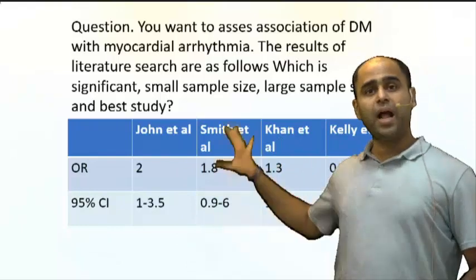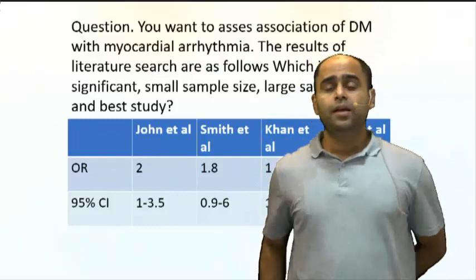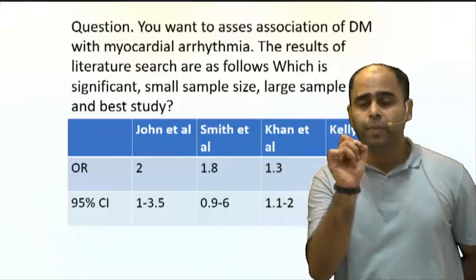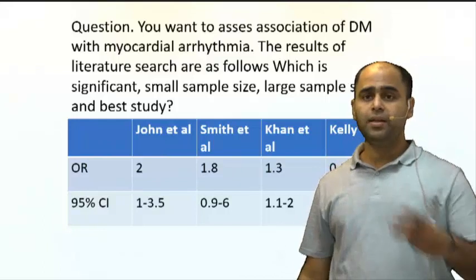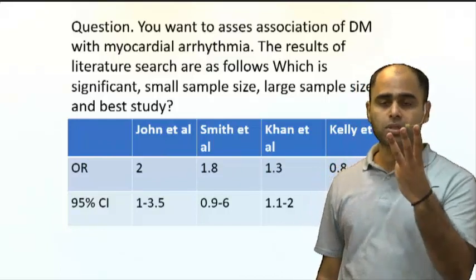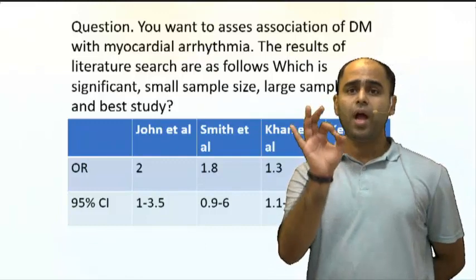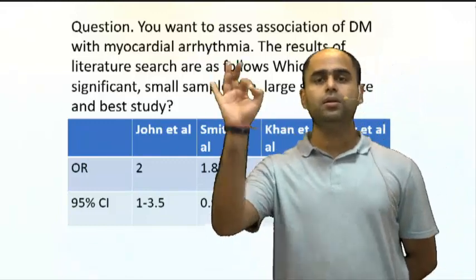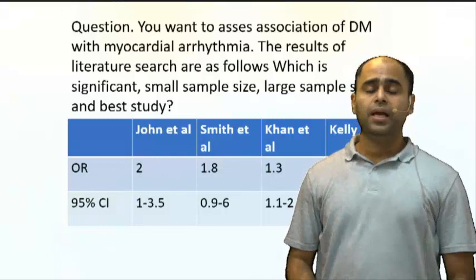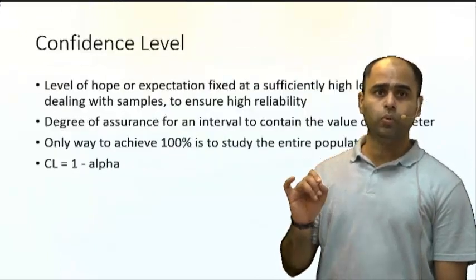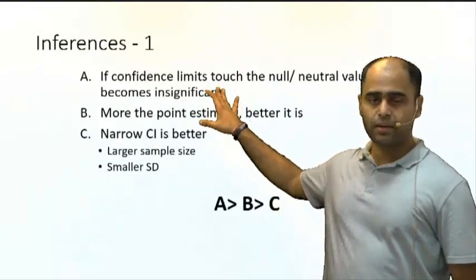Before approaching the question, let us understand some basics in the interpretation of confidence intervals. There are three rules — Rule A, Rule B, and Rule C — and you have to apply them in sequence. Rule A: if the confidence interval touches the null value, it will be insignificant.